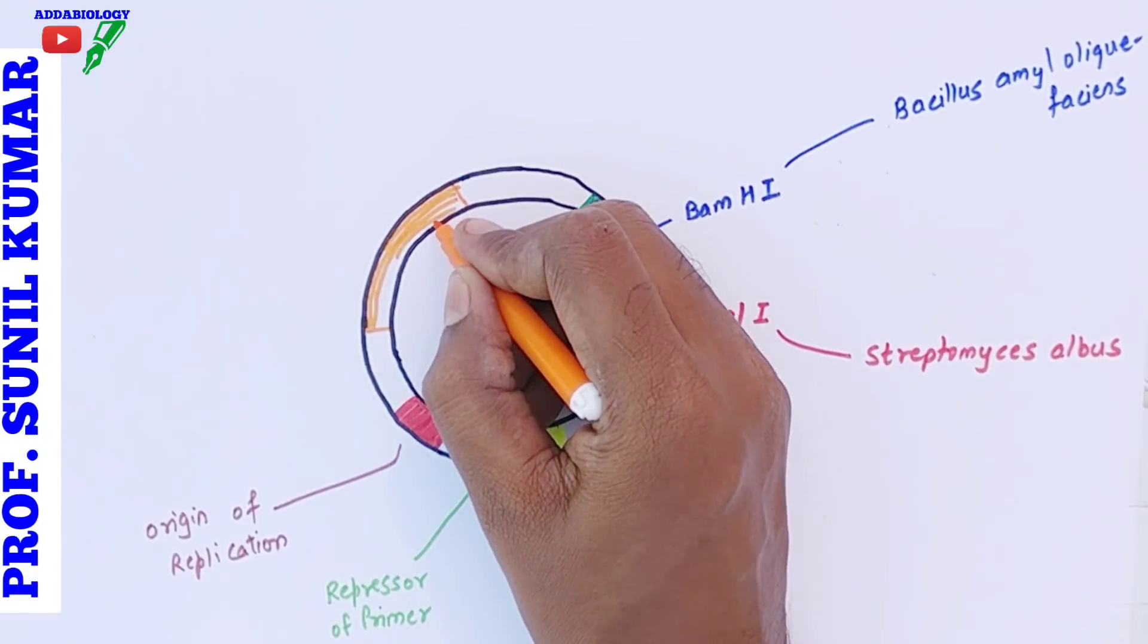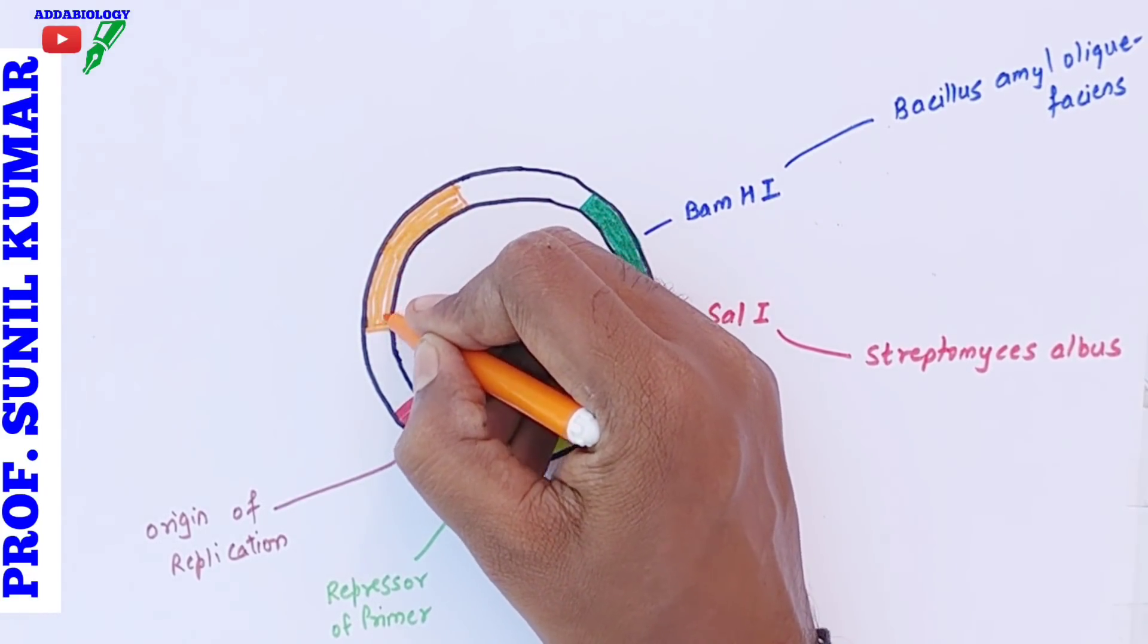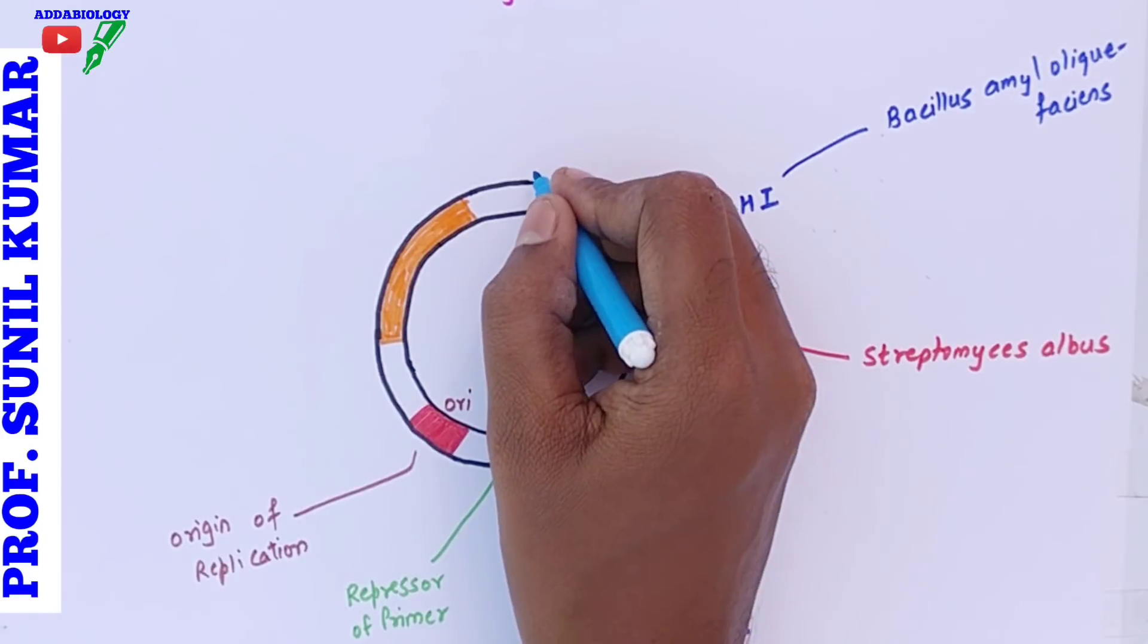This area that I am marking in the orange shade - in exam you should know the full forms of these small enzymes. Here we have the receptors present.